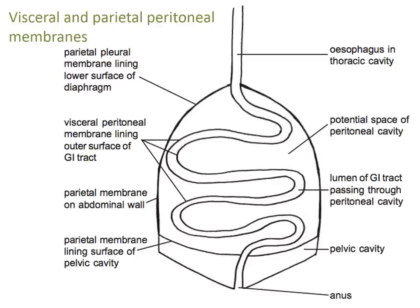We can see the esophagus going through the thoracic cavity. The parietal pleural membrane lines the lower surface of the diaphragm — that is, the lower surface within the thoracic cavity. The pleural membranes line the thoracic cavity, while the peritoneal membranes are in the abdominal cavity. The visceral peritoneal membrane lines the outer surface of the GI tract, and the parietal peritoneal membrane lines the abdominal wall and also the surface of the pelvic organs.